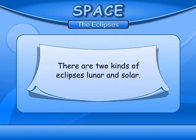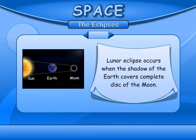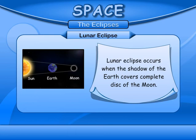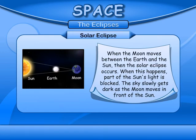The Eclipses. There are two kinds of eclipses: Lunar and Solar. Lunar eclipse occurs when the shadow of the Earth covers the complete disk of the Moon. Solar eclipse occurs when the Moon moves between the Earth and the Sun. When this happens, part of the Sun's light is blocked, and the sky slowly gets dark as the Moon moves in front of the Sun.